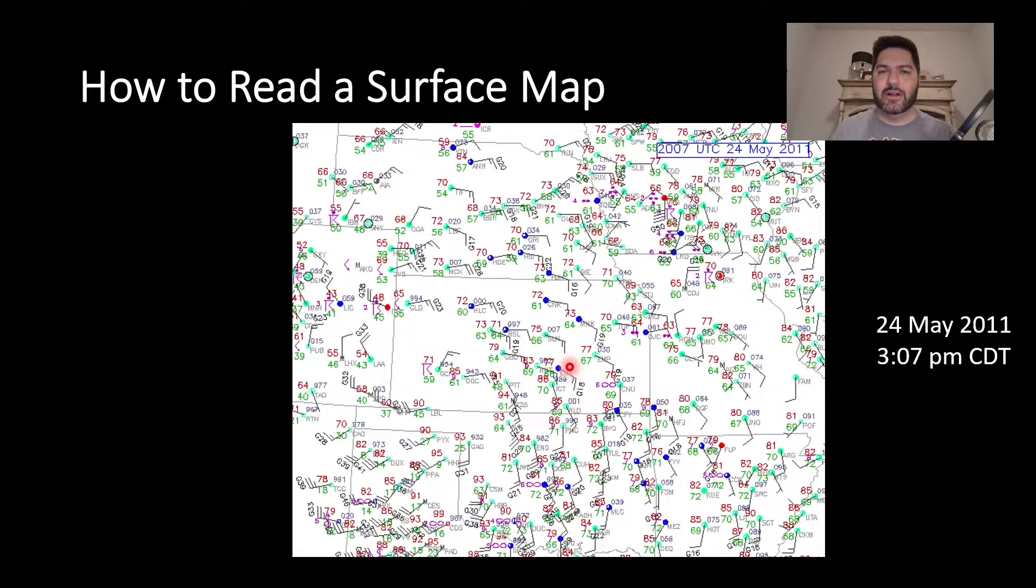By the way, this map is from one of the more infamous outbreaks of tornadoes in Southern Plains history, May 24th, 2011. Look it up. It was a very impressive day.